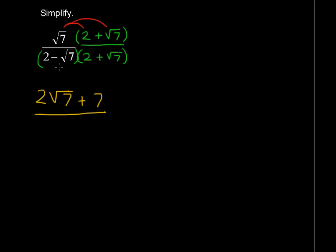Now when we multiply the denominator, we have 2 times 2 is 4, and 2 times the square root of 7 is 2 square roots of 7. And negative square root of 7 times 2 is negative 2 square roots of 7. And negative square root of 7 times positive square root of 7 gives us negative 7.